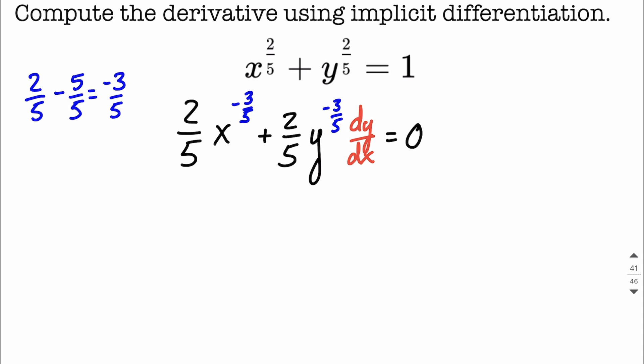So let's go ahead and include 0 on the right-hand side. Now we could do all of this leaving our negative exponents. I'm going to choose to go ahead and rewrite these as we go. I can say this is 2 over 5. I'm going to go ahead and rewrite that x to the negative 3 fifths. We can move it down to the denominator, think of it as x to the positive 3 fifths. Same thing over here, we can say y to the positive 3 fifths. But we are still going to have the dy dx over here, the 0 over on the right-hand side.